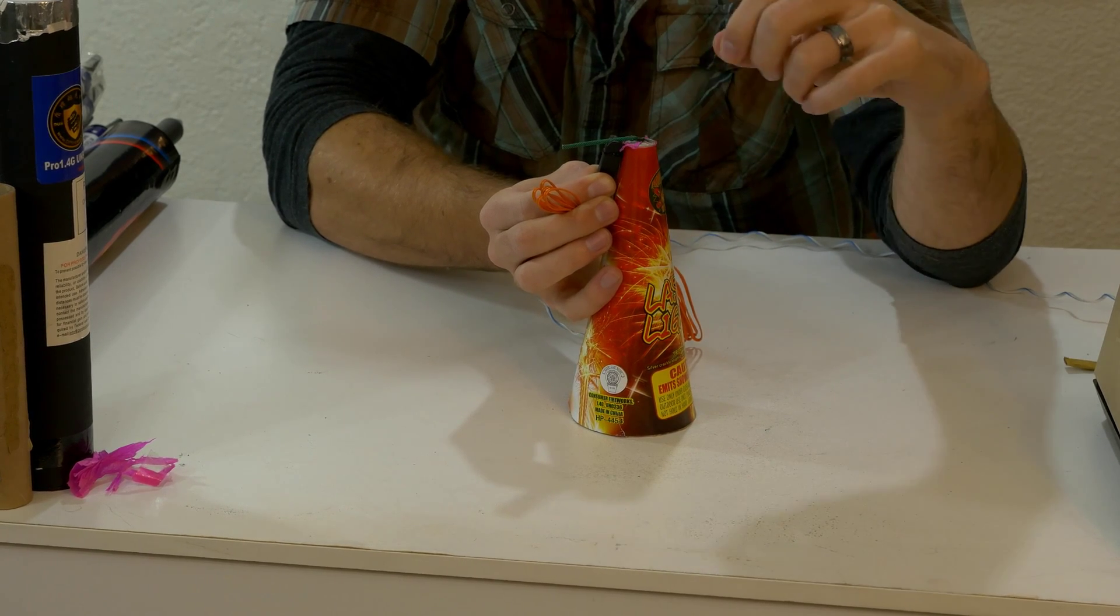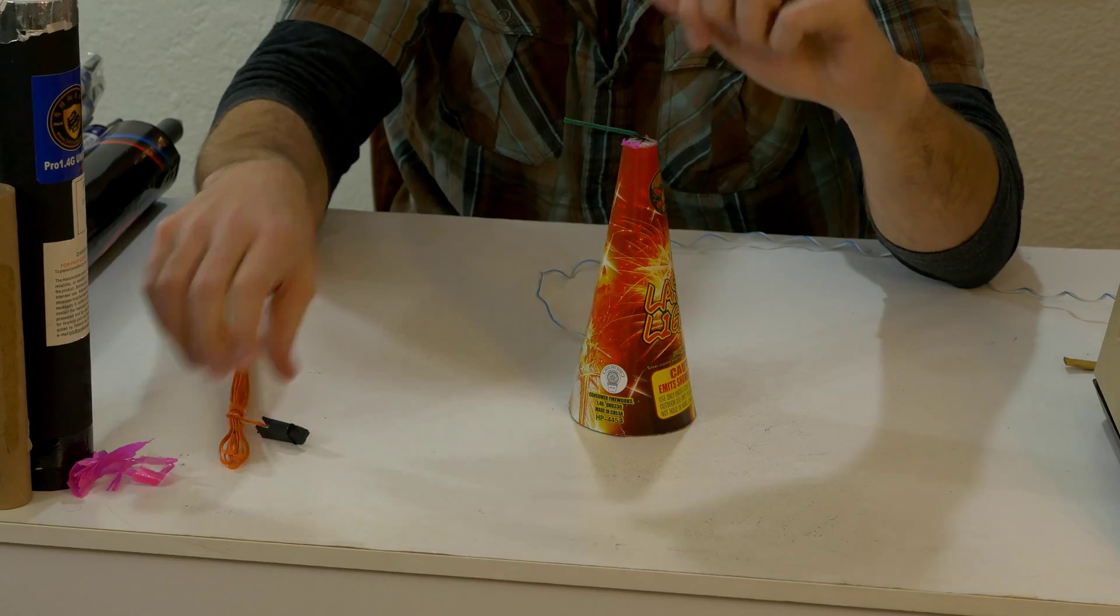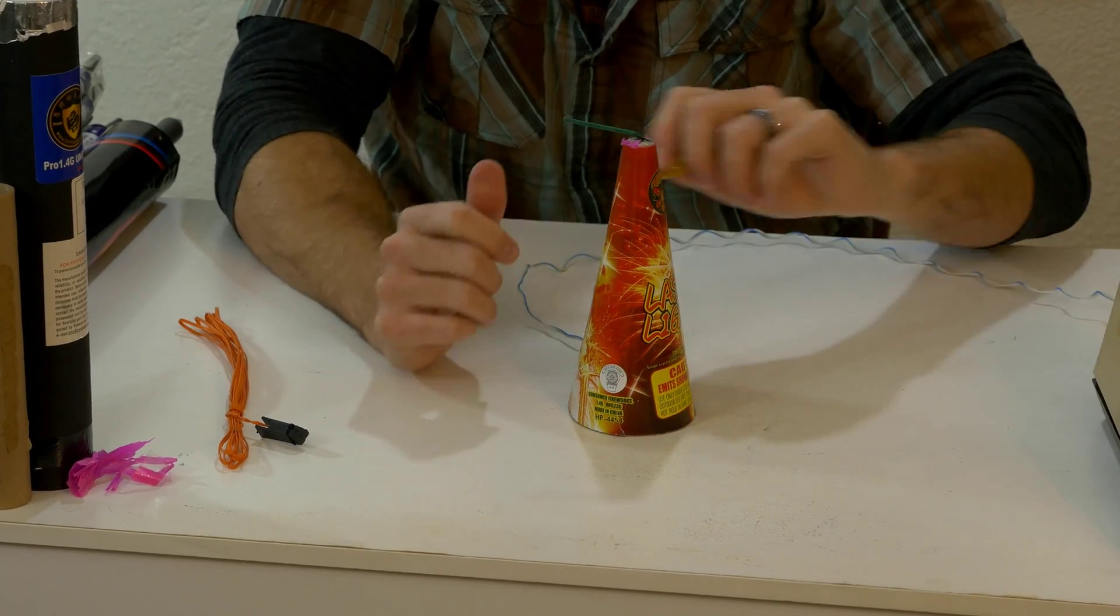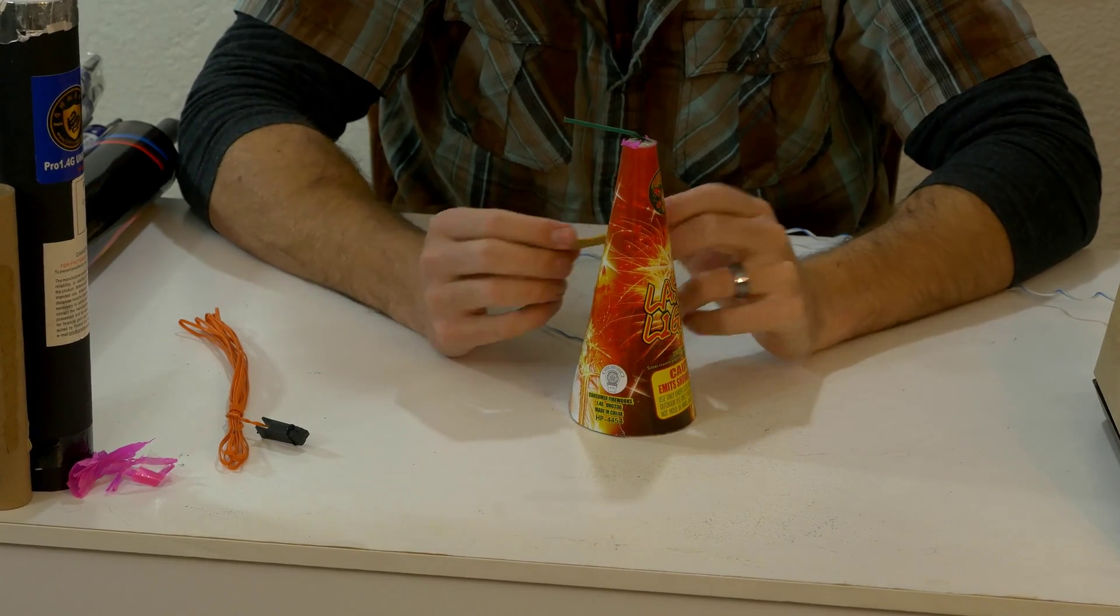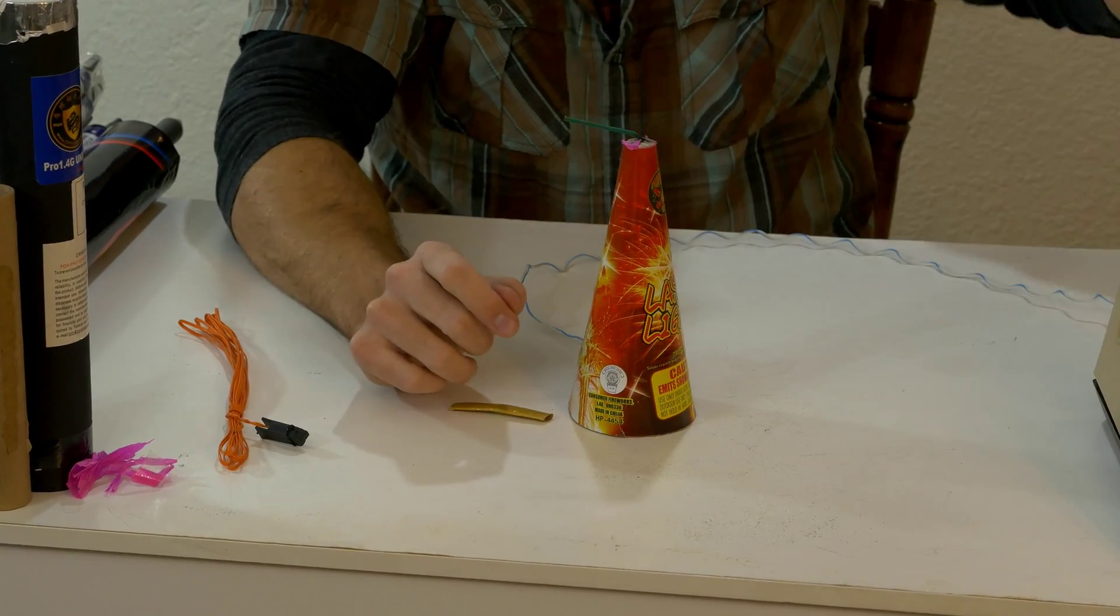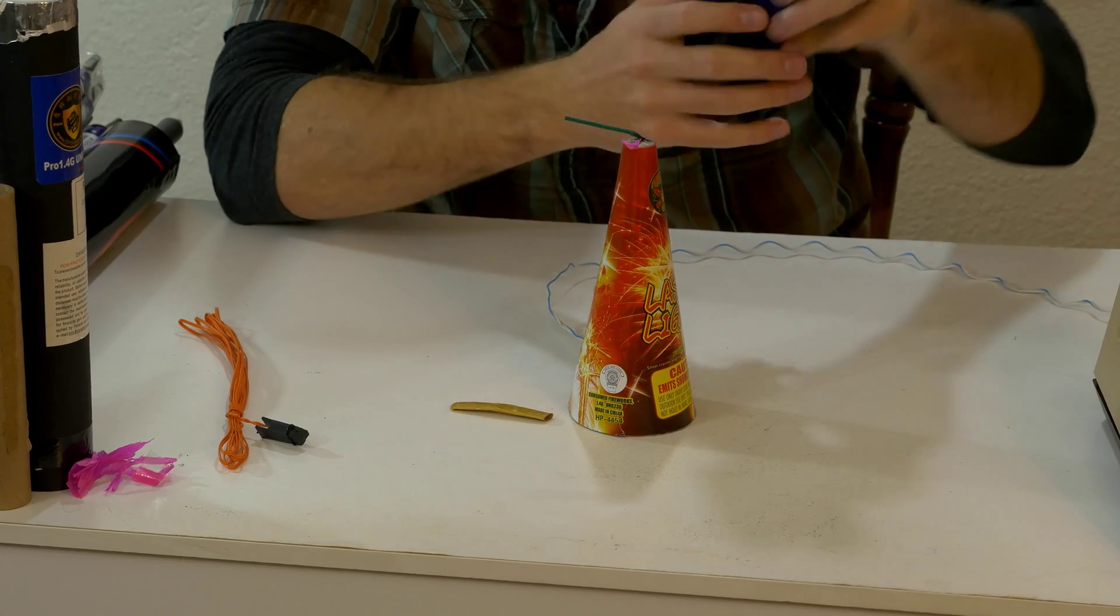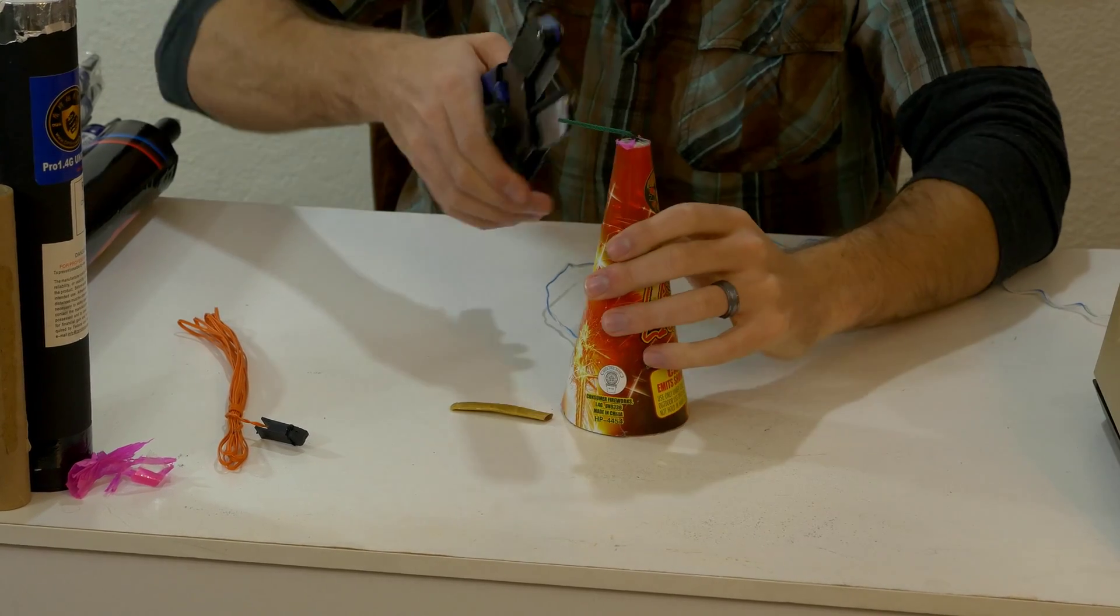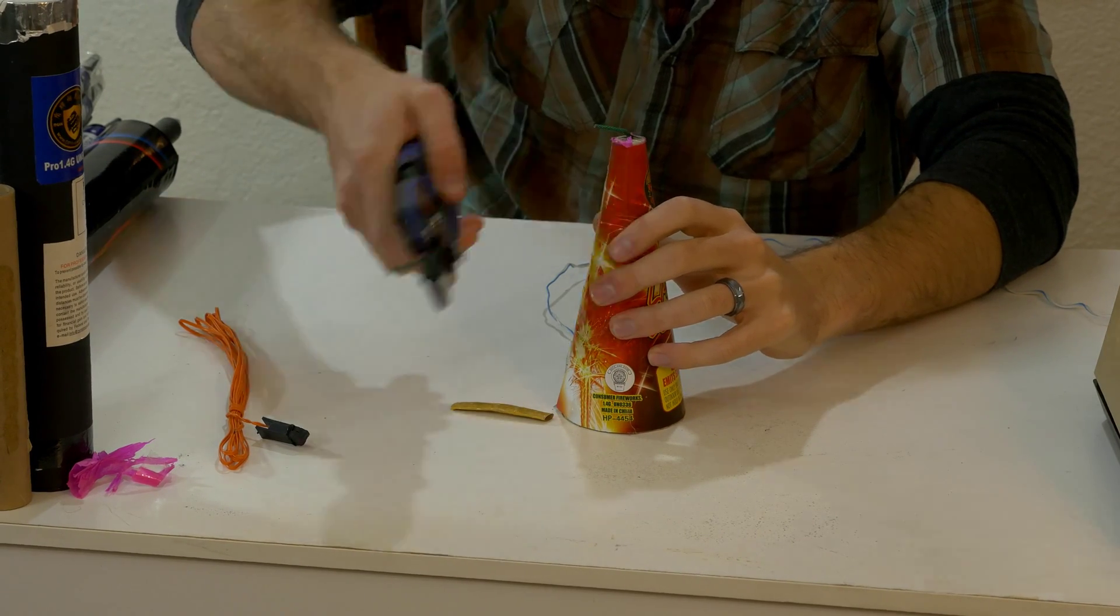You can pull that out of there. If you're using e-match or i-match, I would use our tried and true method again, where what I'd do is cut this visco down a little bit. It's a little long for this. So maybe cut this down with my anvil clippers.